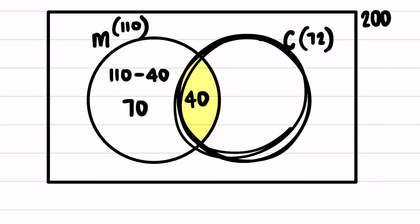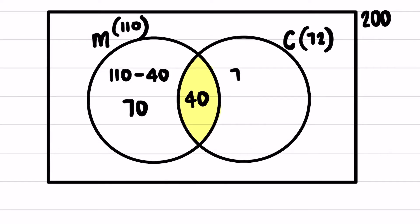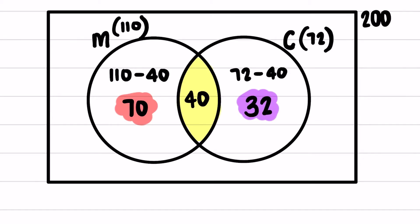I'll do the same for the cream circle. I have 72 people in the cream circle and 40 are already in the intersection, so 72 minus 40 gives me 32 people in cream-only. The 70 people fall in the milk circle but don't touch the cream circle — they like milk only. The 32 people are in the cream circle but not the intersection — they like cream only. The 40 in the intersection like both milk and cream.